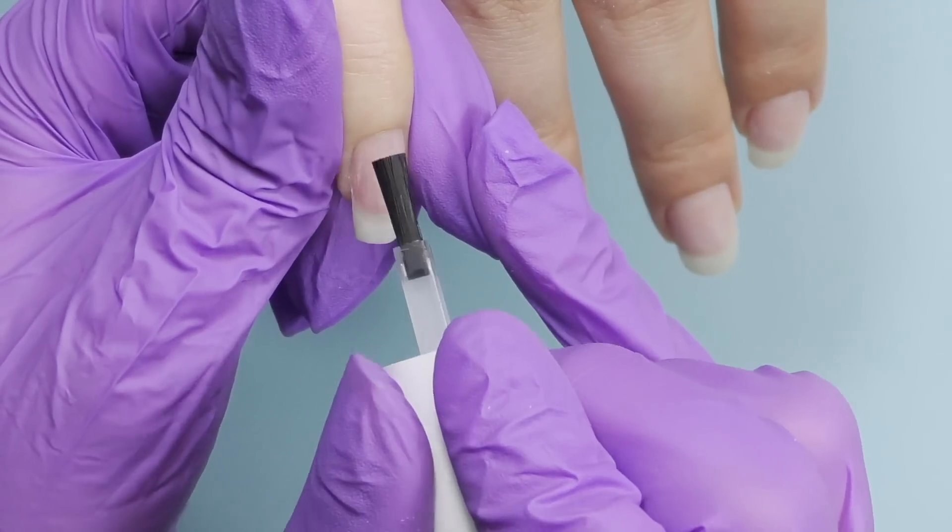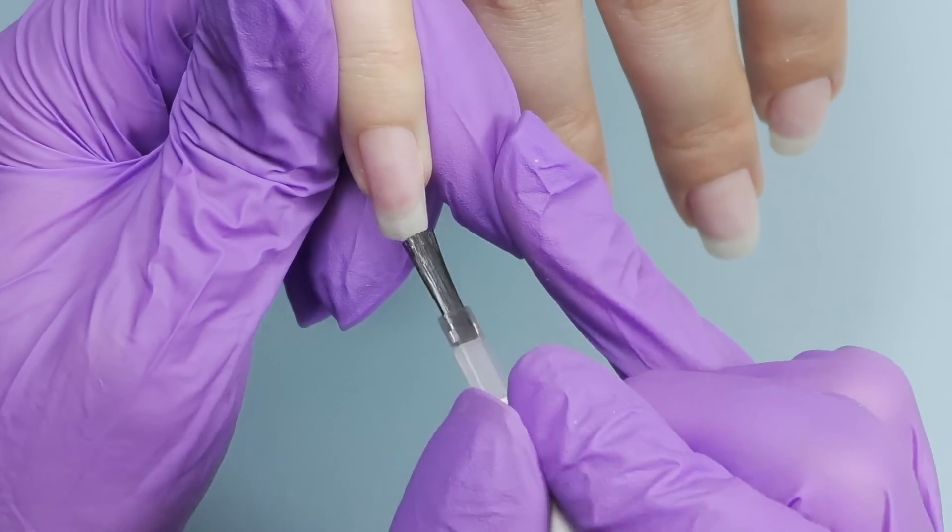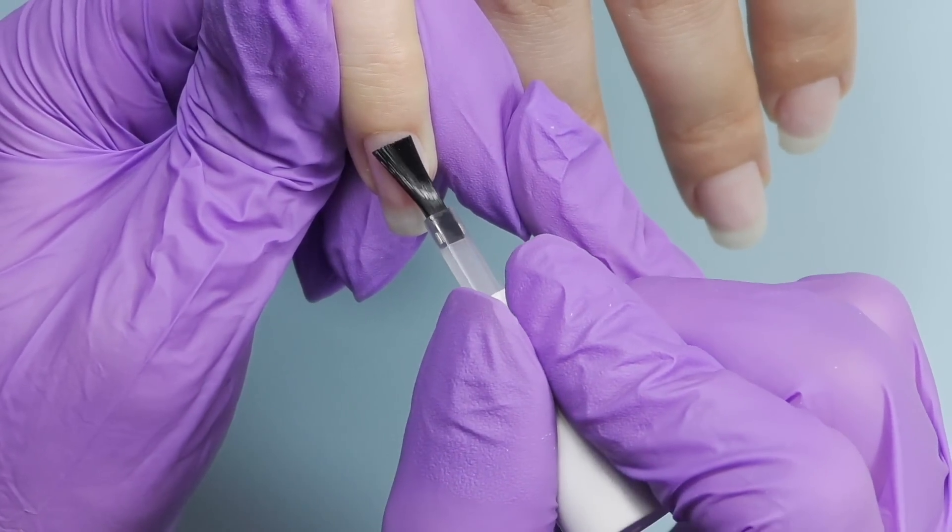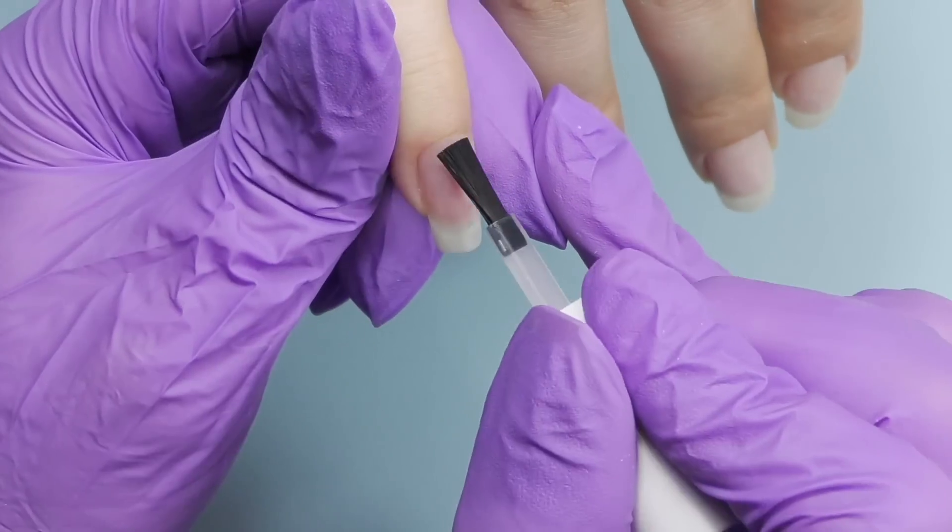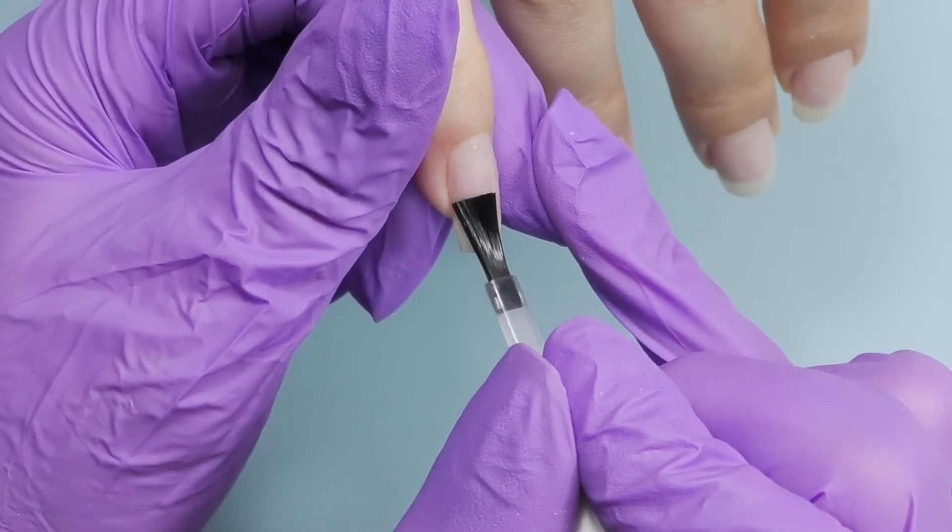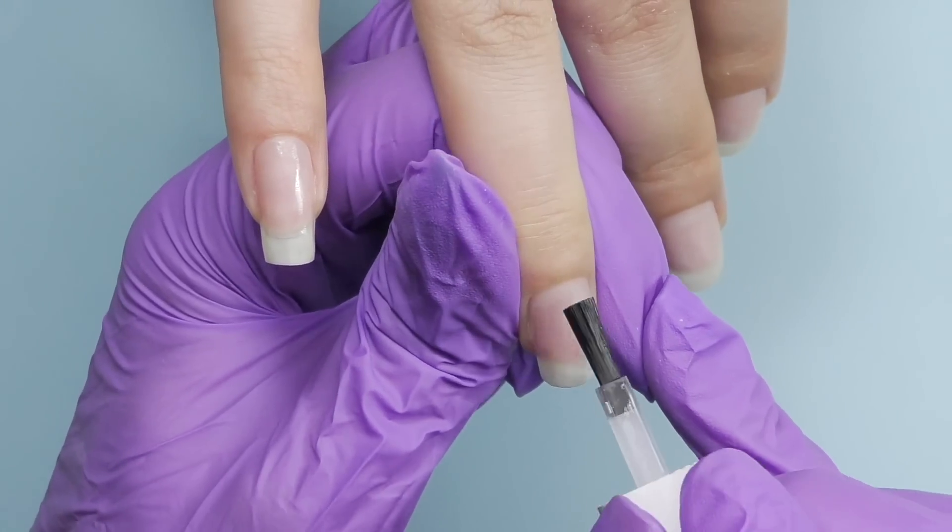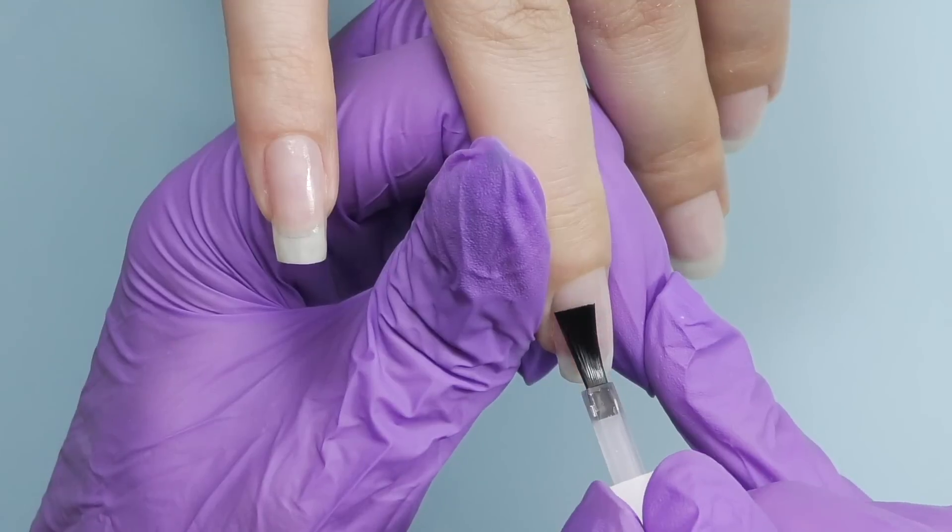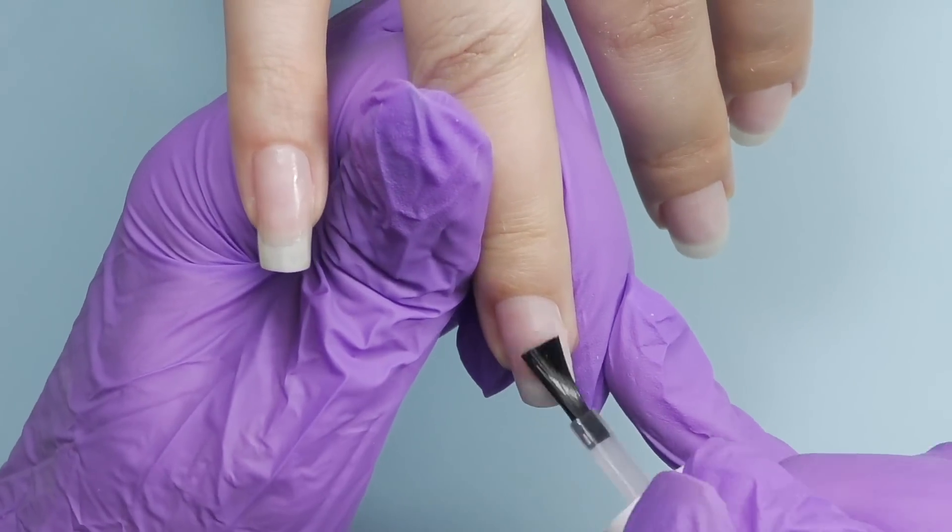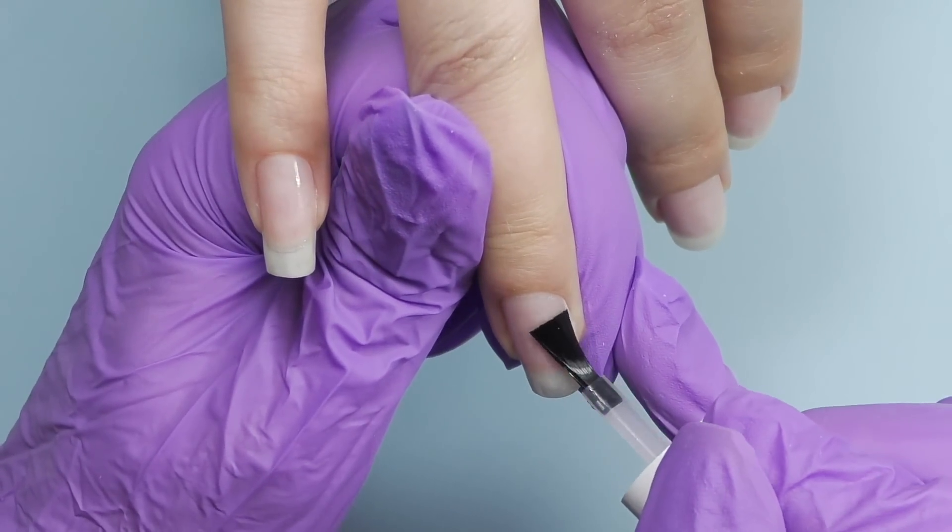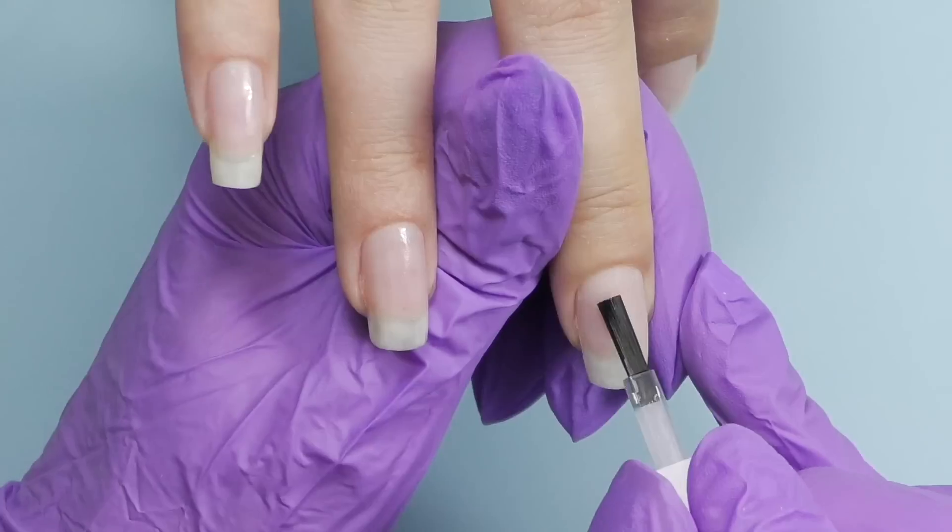Now I'm going to use non-acid pH bond primer, which is included in the kit, and apply it on the nail to provide better adhesion. You only need to apply a thin layer, and it will look a little sticky. That's totally fine. You do not need to wait until it evaporates, because it's going to stay on the nail like some sticky substance.